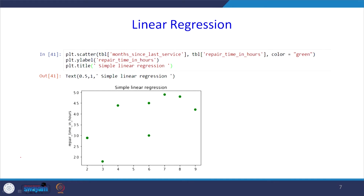First, we will do a scatter plot between months since last service and repair time in hours. When you look at this scatter plot, you see that there seems to be a positive trend, because when the months since last service is more, the repair time in hours is also getting more.